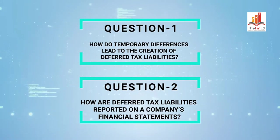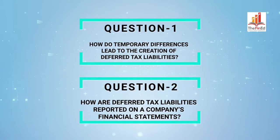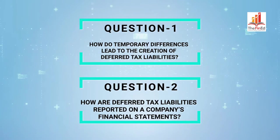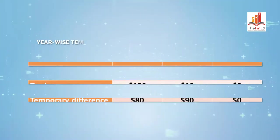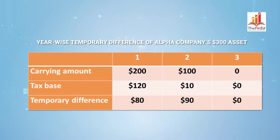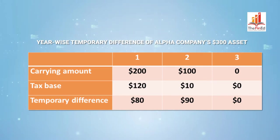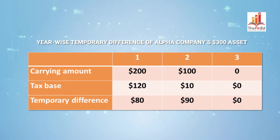Does that sound a bit too much to digest? Don't worry, we're in this together. Here's a recap of the year-wise temporary difference resulting from the difference between the carrying amount and the tax base of Alpha's $300 asset.